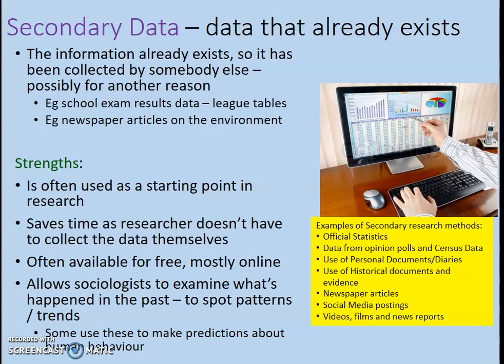Another example of secondary data is what's known as a qualitative source — newspaper articles, for example, on the environment, schools, or health. These are written documents created by someone else for another reason, but sociologists can use them to conduct research, particularly on things like public opinions on different matters and how attitudes might have changed over time — for example, attitudes towards the environment.